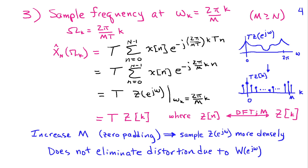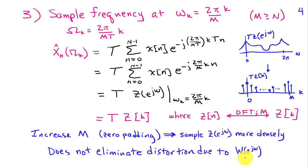By increasing M — adding more zeros — we can sample z of omega as densely as we wish, getting a very good representation of T times z of e to the j omega. However, increasing M does not eliminate the distortion introduced in the truncation step, when we convolved the DTFT of x of n with the window function W of e to the j omega.